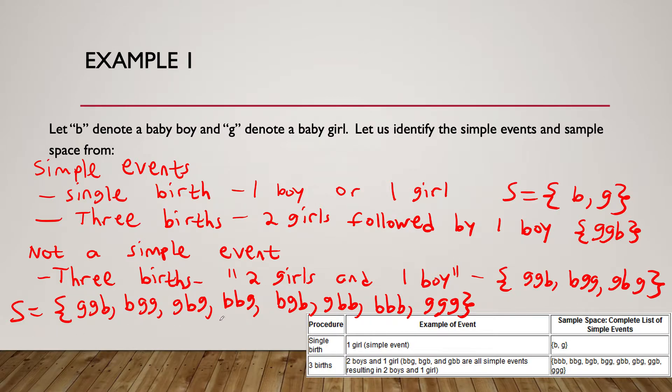The overall sample space for three births are GGB, BGG, GBG, BBG, BGB, GBB, BBB, and GGG.